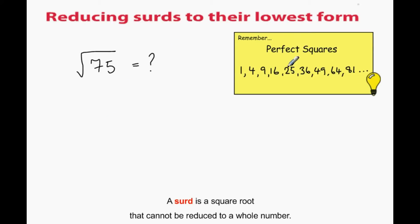Again, does any square number go into 75? 75 is 3 25's. Since the square root of 25 is 5, this is 5 root 3.